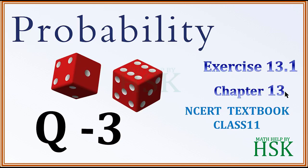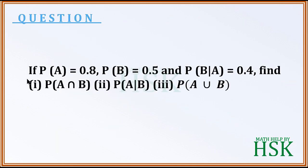Moving to question number 3 of exercise 13.1. If probability of A is equal to 0.8, probability of B is equal to 0.5, and probability of B given A is equal to 0.4 — find: first, probability of A intersection B; second, probability of A given B; and third, probability of A union B.